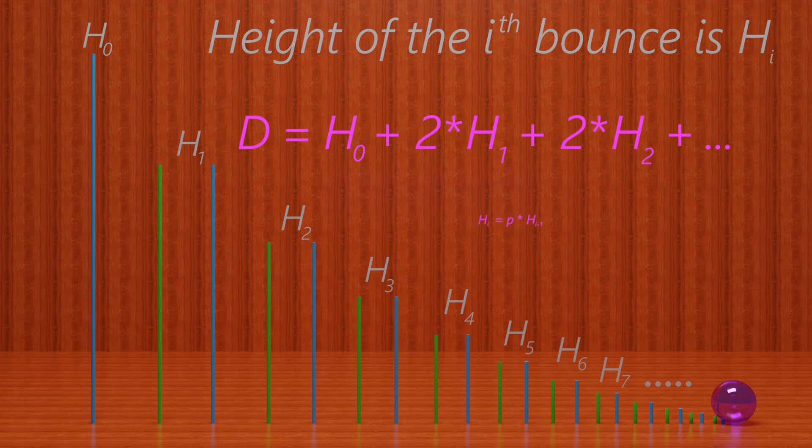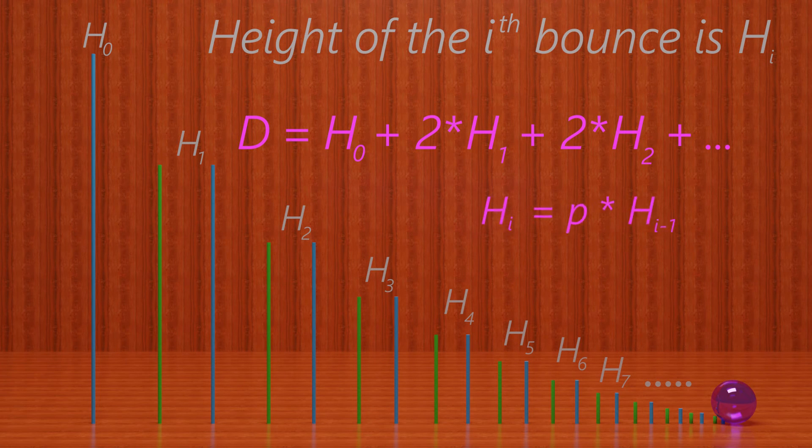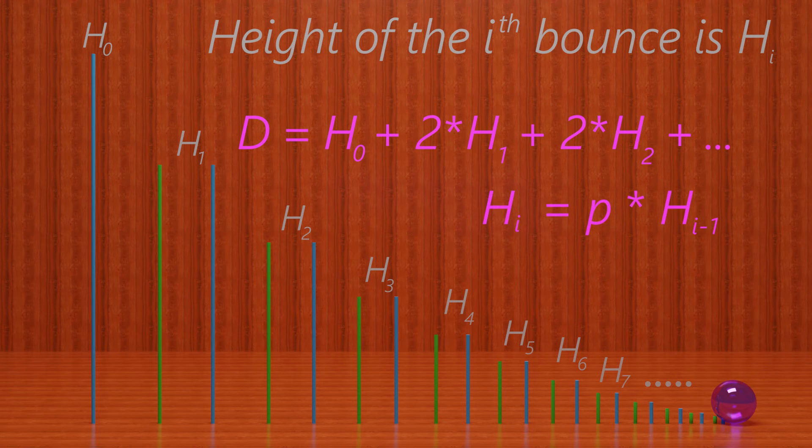By assumption, we know Hi equals p times Hi minus 1. This is the height of each bounce as proportional to the previous bounce.